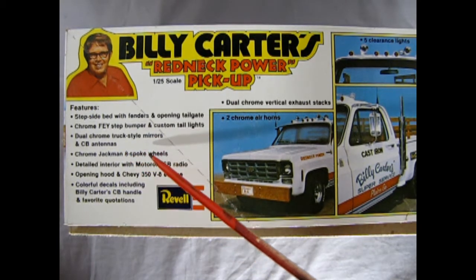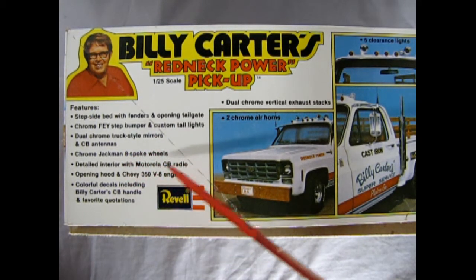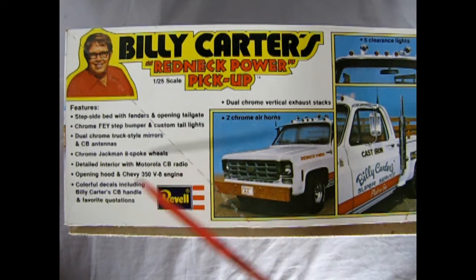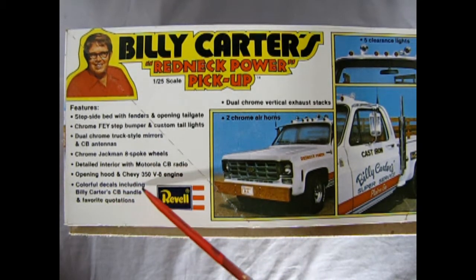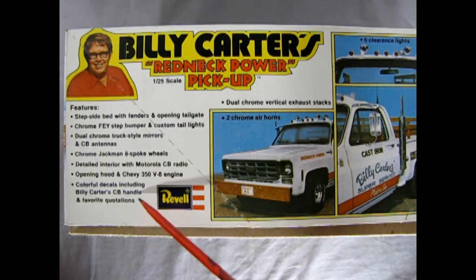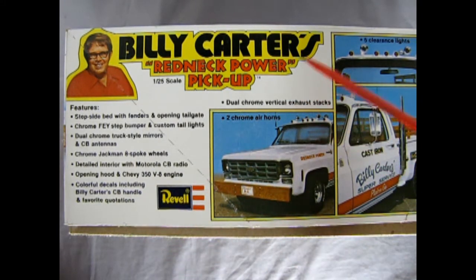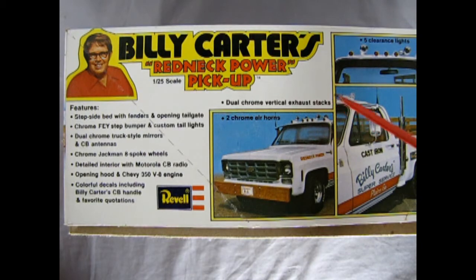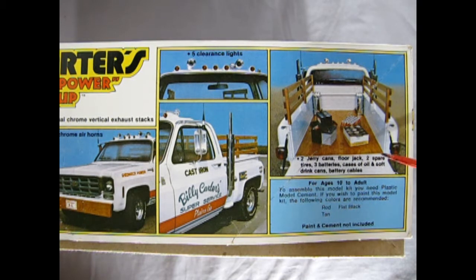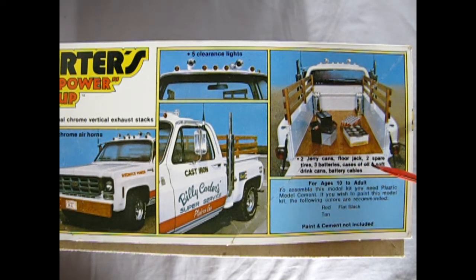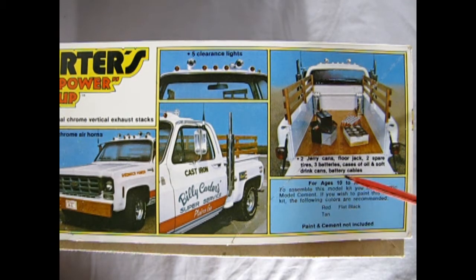Dual chrome truck style mirrors and CB antennas, chrome Jackman eight-spoke wheels, detailed interior with Motorola CB radio, opening hood and Chevy 350 V8 engine, colorful decals including Billy Carter's CB handle and favorite quotations, dual chrome vertical exhaust stacks, two chrome air horns, five clearance lights.